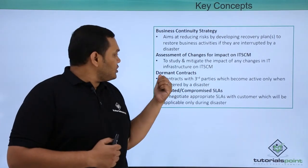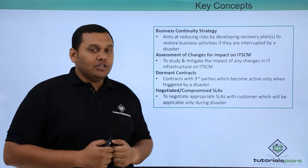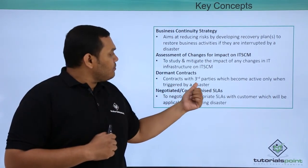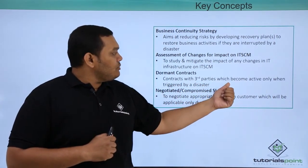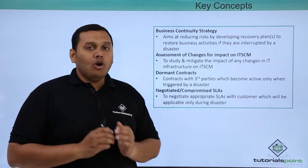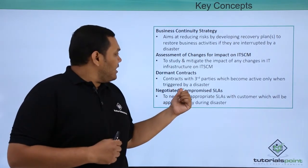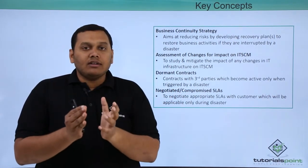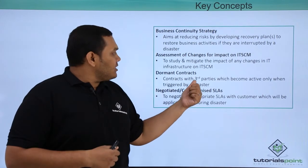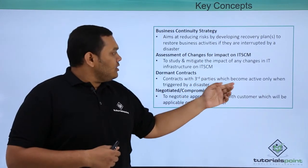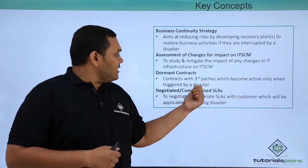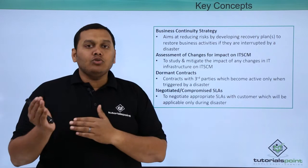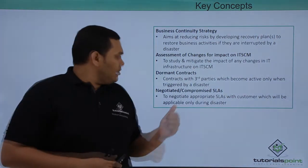The next concept is dormant contracts. A dormant contract is a contract with third parties that becomes active only when triggered by a disaster. These contracts are signed with third parties to become active only when a disaster occurs, and they define how to restore operations based on the recovery plan.